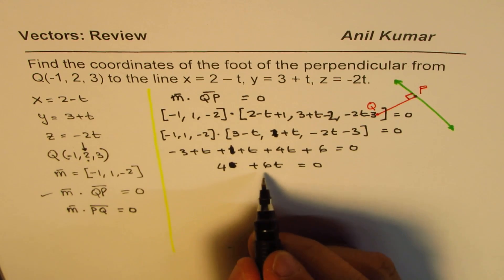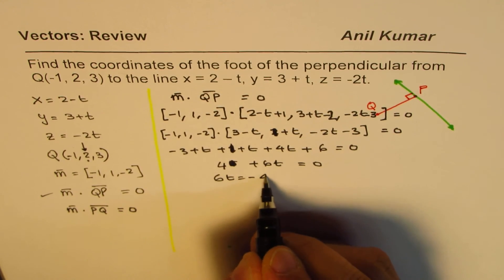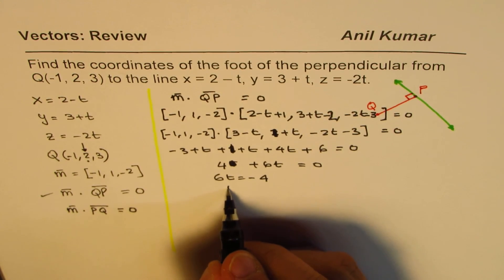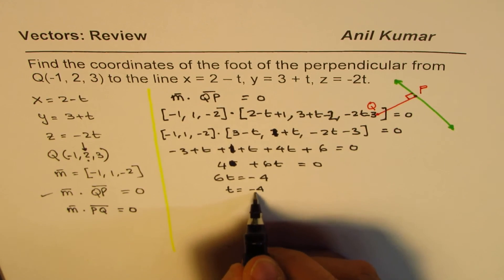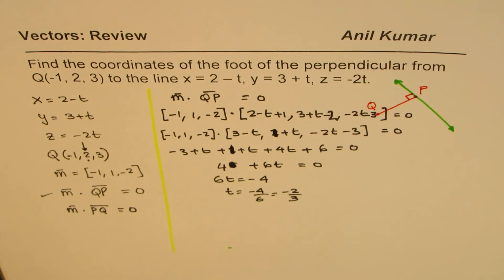So from here, we can get what 6t is. We get 6t = -4, or we get t = -4/6, which is -2/3. So that is the value of t.